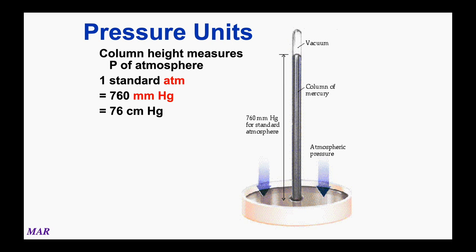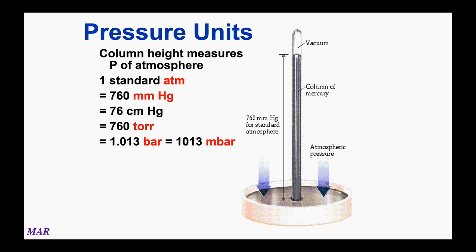A torr is another term for a millimeter of mercury, named after Torricelli. So 760 torr also equals one atmosphere. In the face-to-face lab we use millibars — a bar is close to but not quite the same as an atmosphere. 1.013 bars equals an atmosphere. There are 1,000 millibars per bar, so that's 1,013 millibars per atmosphere — that's what we'll use in the lab for calculations.